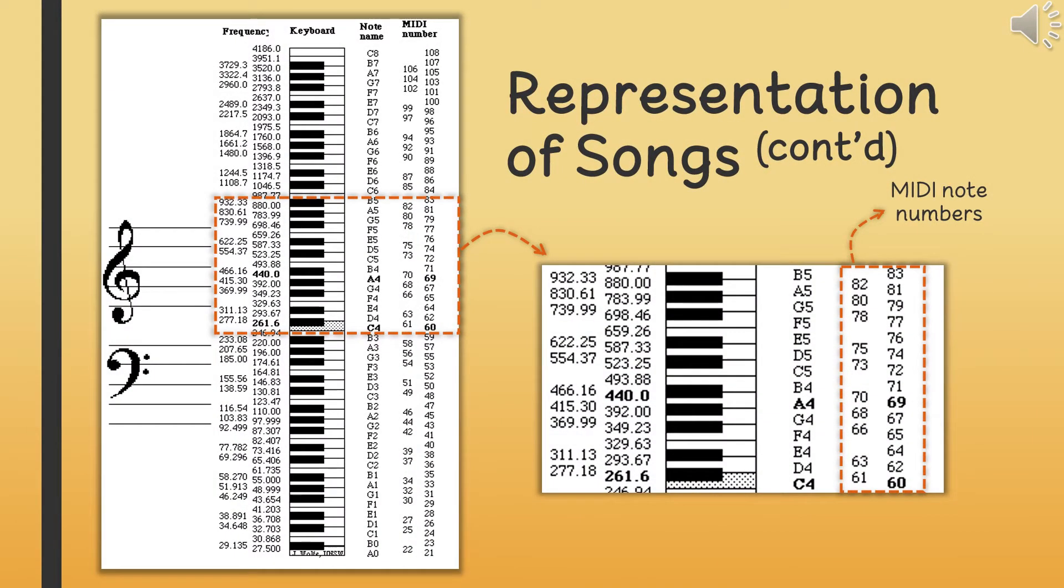In the left figure, MIDI numbers of notes are shown. For example, C note in fourth octave is 60, and C sharp note in fourth octave is 61.